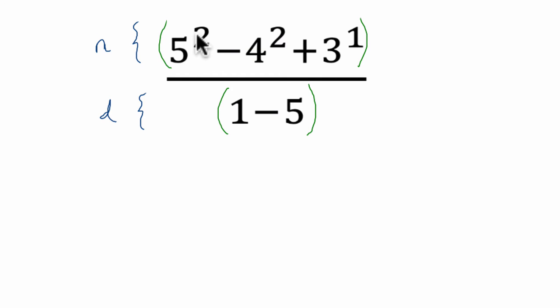So in the numerator we have 5 squared. That means 5 times 5. 25. 4 squared is 16. 4 times 4 is 16. And 3 to the first is just 3. Put my signs in.